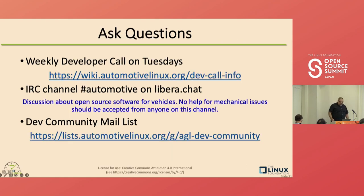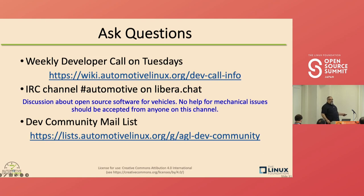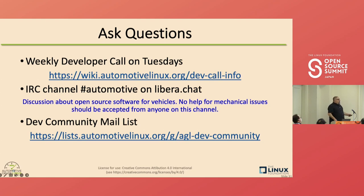AGL — everything we do is open. We have an open mailing list anybody can join. We have a weekly developer call every Tuesday that anybody can join and ask questions. All the expert groups I talked about have calls at least every two weeks; IVI meets every week. We're also on IRC. All these slides and links are available on the schedule page — I've uploaded them.